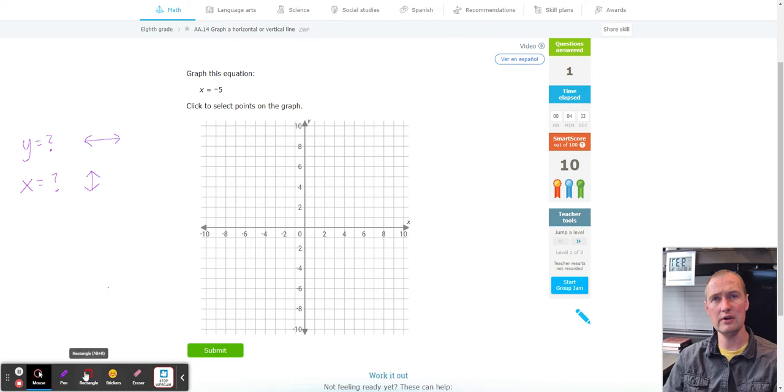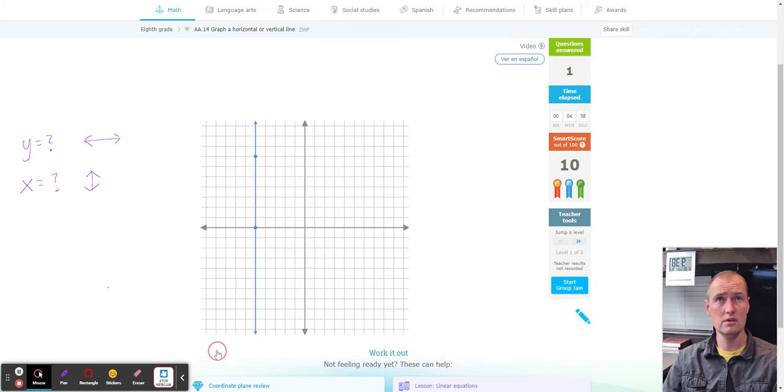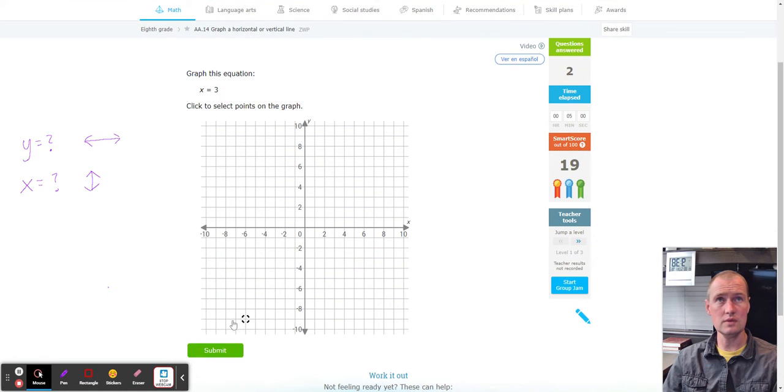Next up, we got X equals negative five. So what I'm going to do is I'm going to find X equals negative five, negative one, negative two, negative three, negative four, negative five. And remember, X equals is a line going straight up and down. It doesn't matter where this other point goes as long as the line is perfectly vertical. That means there could be no slope. Speaking of slope, when a line goes straight up and down perfectly, this is also called undefined slope.